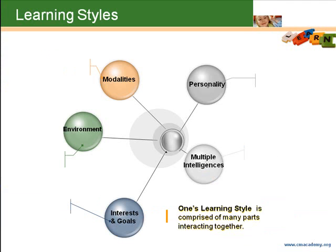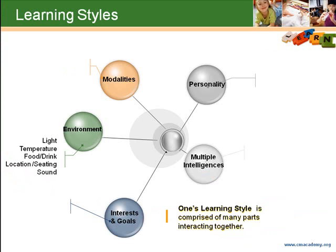One's learning style is comprised of many parts interacting together. One's environmental preferences include light, temperature, the ability to have food or drink on hand, location or seating when studying, and sound.